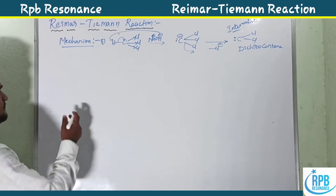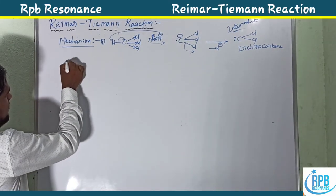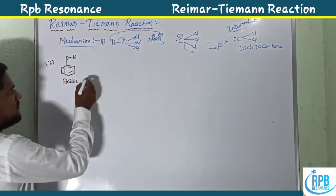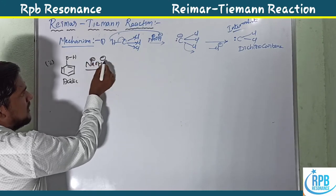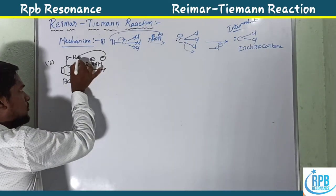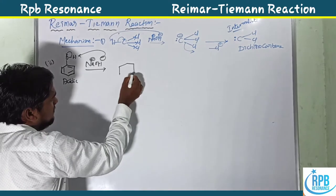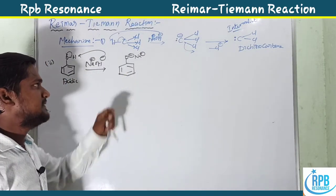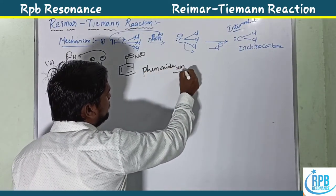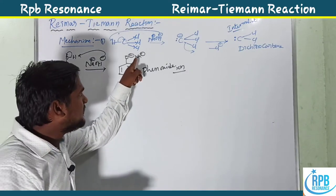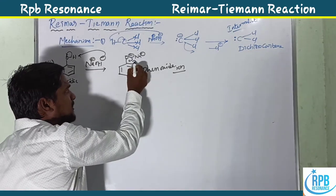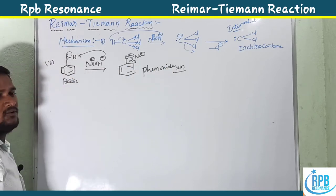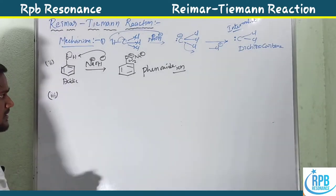Step 2: Formation of phenoxide ion. Phenol is acidic in nature. When treated with NaOH or KOH (OH⁻ acting as a base), the base abstracts the proton from phenol, creating a negative charge on the oxygen. This species, with the negative charge on oxygen surrounded by cations, is called the phenoxide ion. The phenoxide ion is more reactive than phenol because it can participate in resonance, delocalizing the negative charge — making it a better nucleophile for the reaction mechanism.